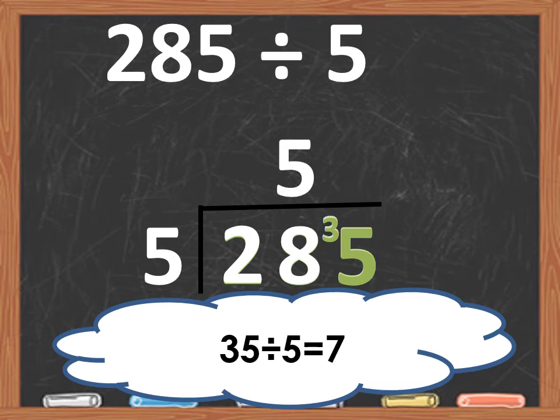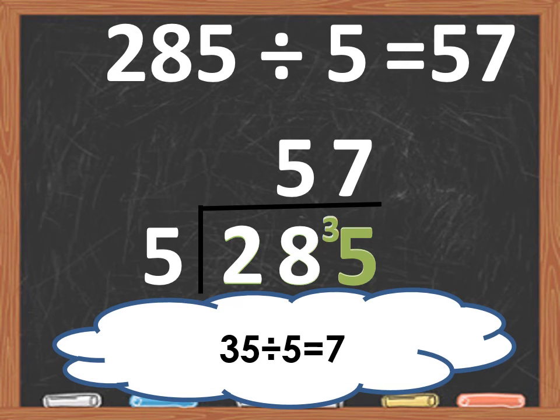35 divided by 5 equals 7. Let's put 7 up in the quotient. And our final quotient is 57. So our answer is 285 divided by 5 equals 57.